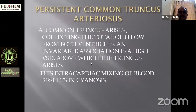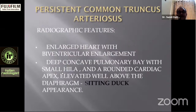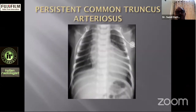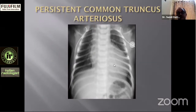In persistent common truncus arteriosus, a single common truncus arteriosus collects outflow from both ventricles; there is an invariable association with a high VSD above which the truncus arises. Intercardiac mixing of blood results in cyanosis. The enlarged heart with biventricular enlargement, deep concave pulmonary bay with small hila, and a rounded cardiac apex elevated well above the diaphragm gives rise to a 'sitting duck' appearance. When pulmonary venous stenosis coexists, oligemic lung fields are seen. A right-sided truncal arch may also be present.